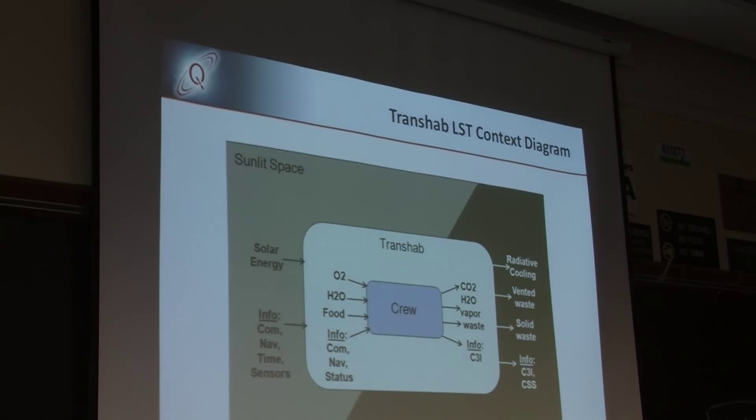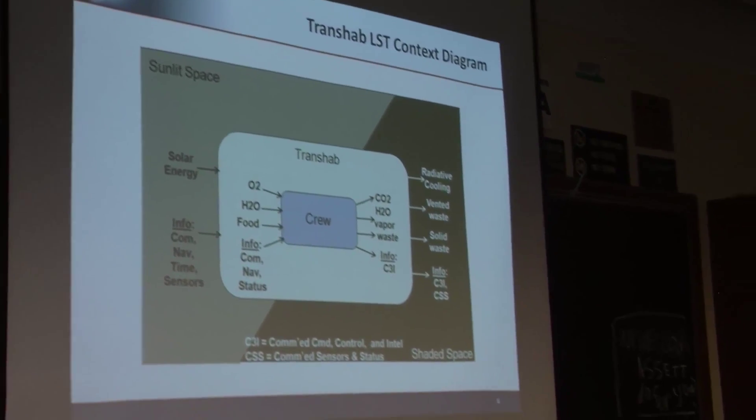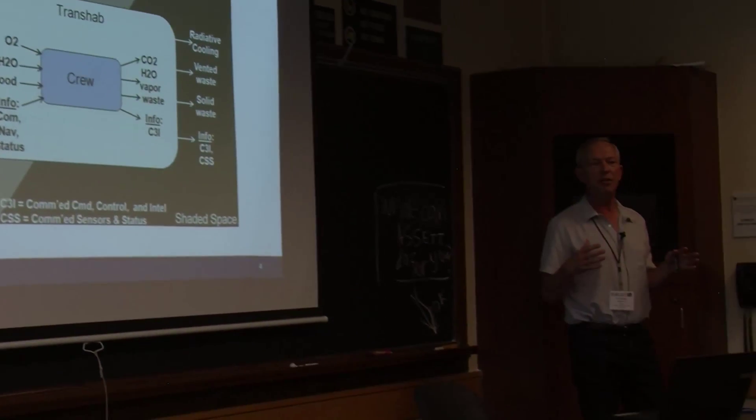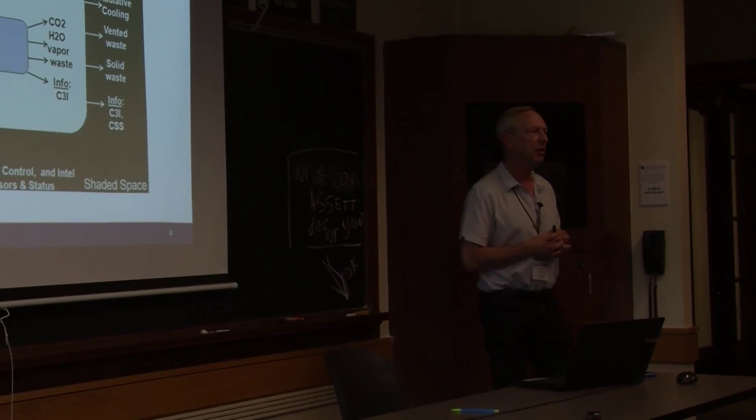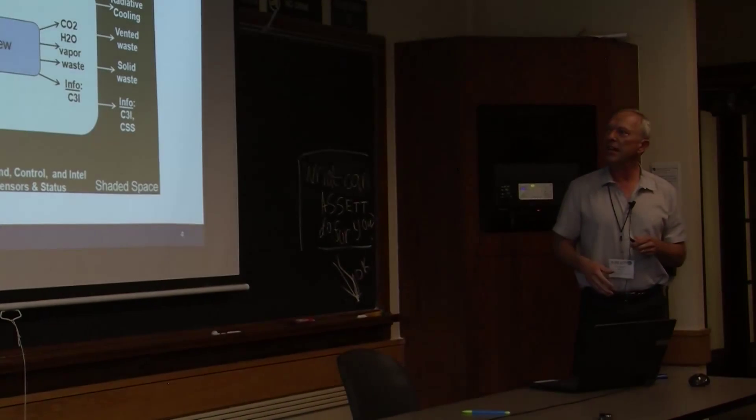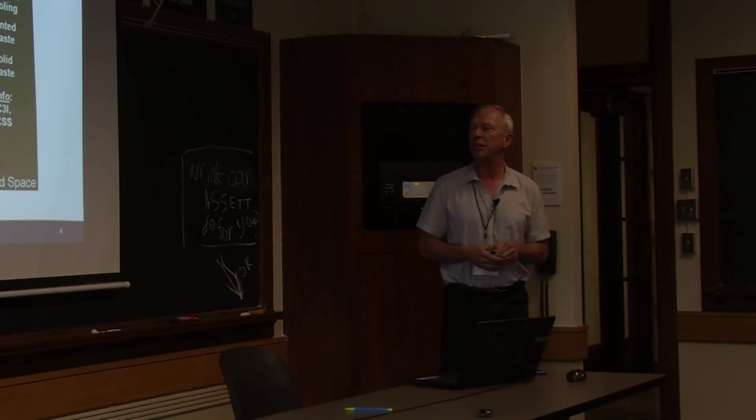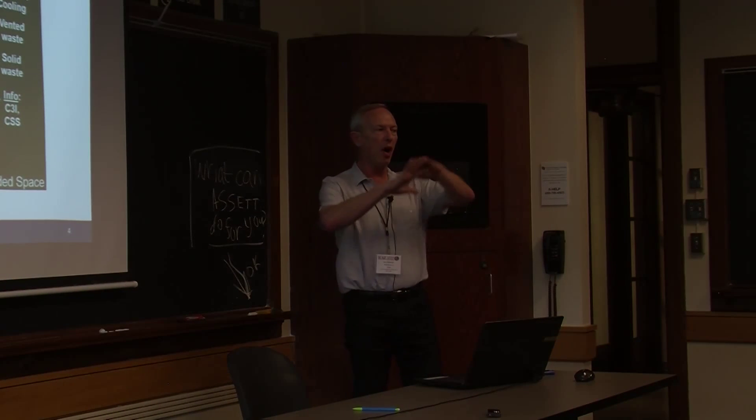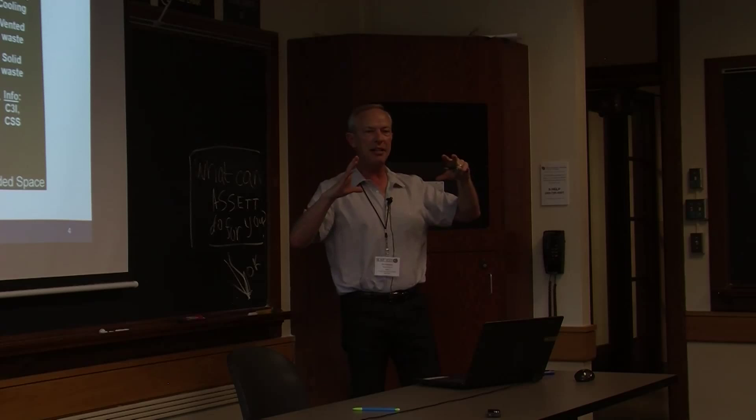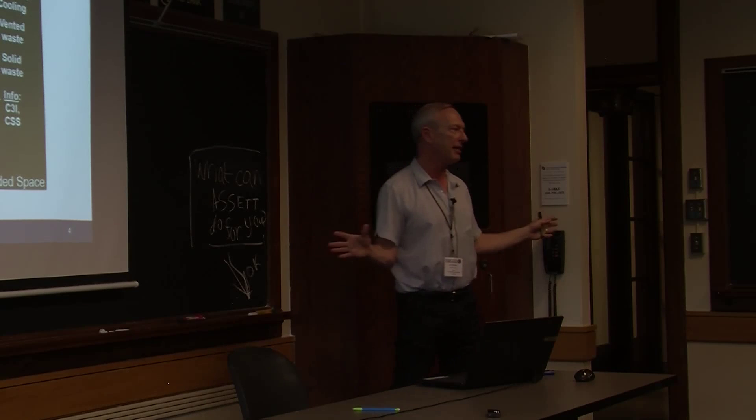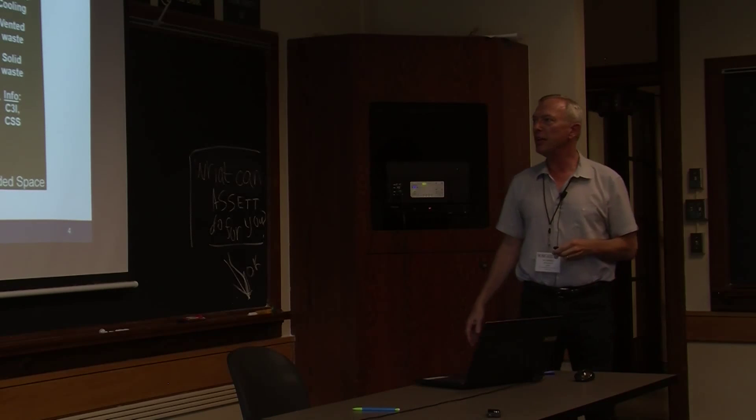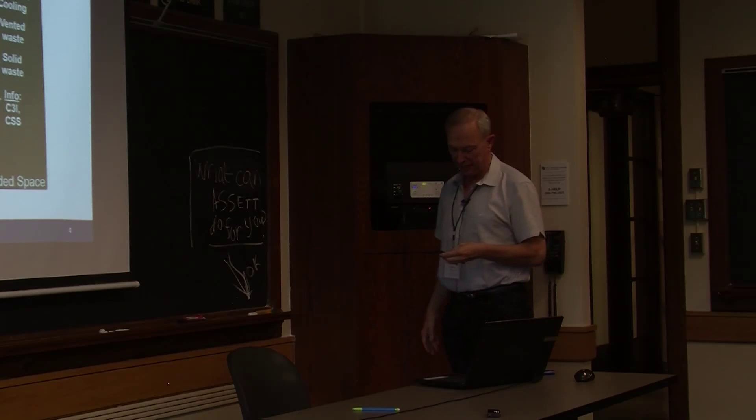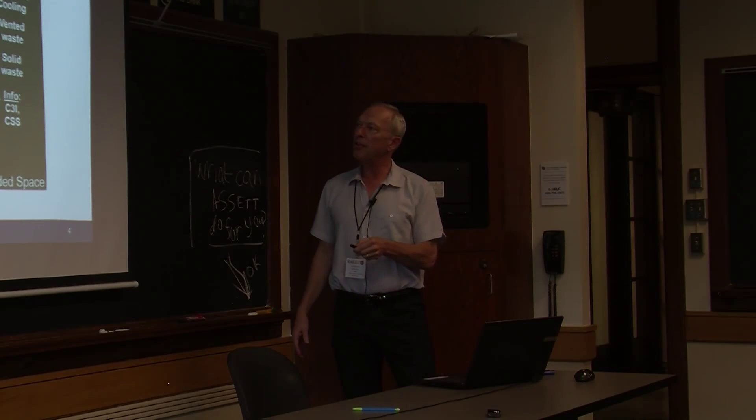So you'll see some of these symbols and you may even notice that some of these symbols don't look the same as what became the standard for living systems theory functions. So how do we start with this? In model-based system engineering, you really want to understand when you're looking at a human mission, you want to understand what is the context of that mission. And so to do that, you have to divide all of reality into what's inside of the system versus what's outside of the system. And so that's the boundary that you're defining.